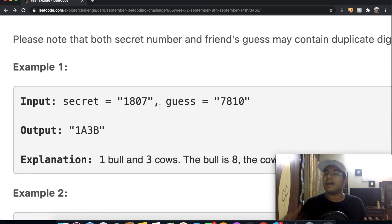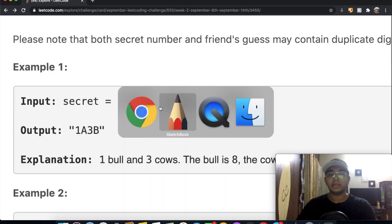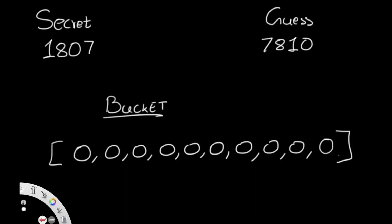Finding cows is trickier. We'll use a bucket — a list of 10 zeros representing digits 0 through 9, where each index represents that digit. This will help us track which digits appear in the secret and guess but in different positions.